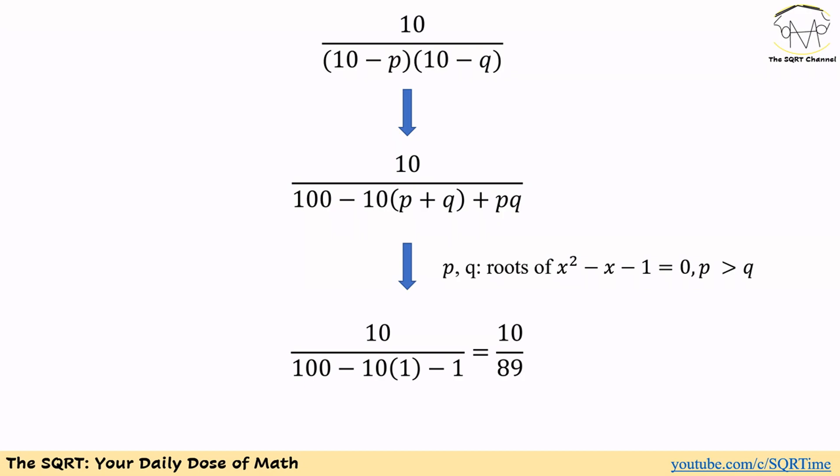After simplification we have 10 over (10 minus P) times (10 minus Q). Expanding the denominator gives 100 minus 10 times (P plus Q) plus PQ. Now, since P and Q are roots of x squared minus x minus 1 equals 0, by Vieta's formulas P plus Q equals 1 and PQ equals negative 1. Replacing those values, we end up with 10 over 89 as the final answer.